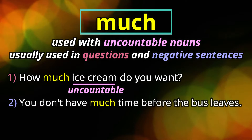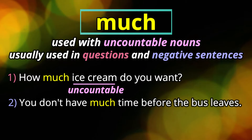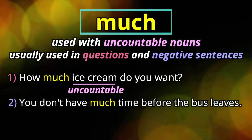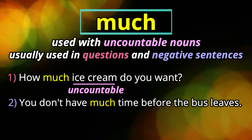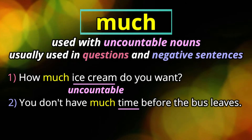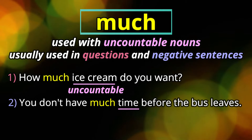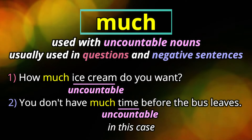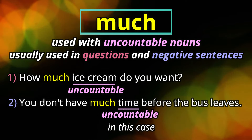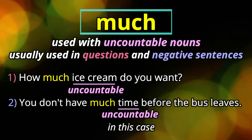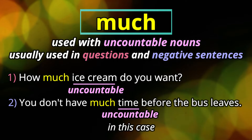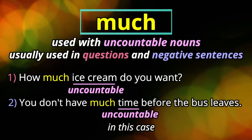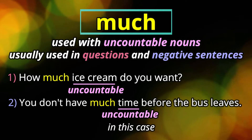In the second example: you don't have much time before the bus leaves. This is a negative sentence — we're talking about not having enough time. Time in this particular use is uncountable, so we use much. Time is counted by minutes, seconds, and hours — those things you can count — but time the way it's used here you can't count it, so we use much.